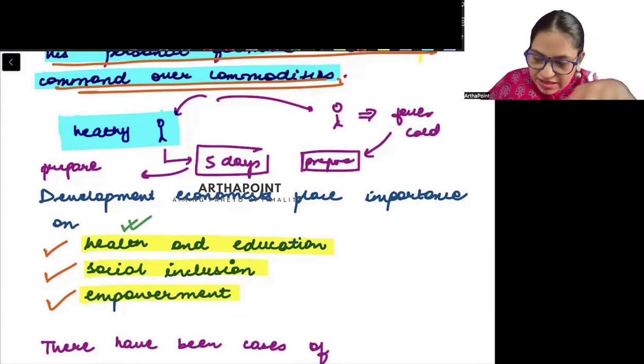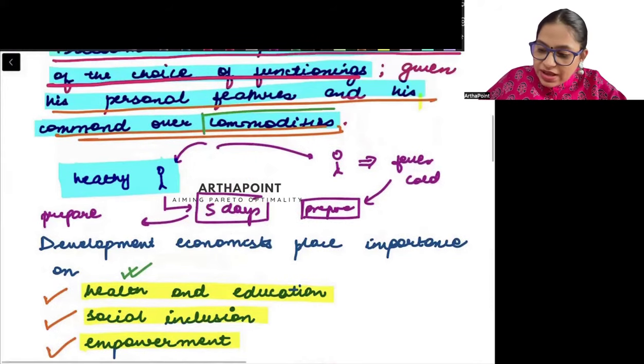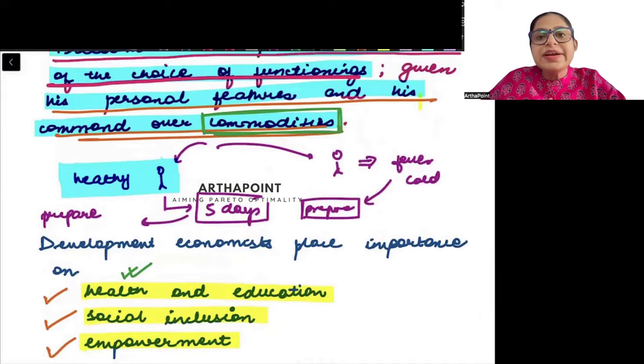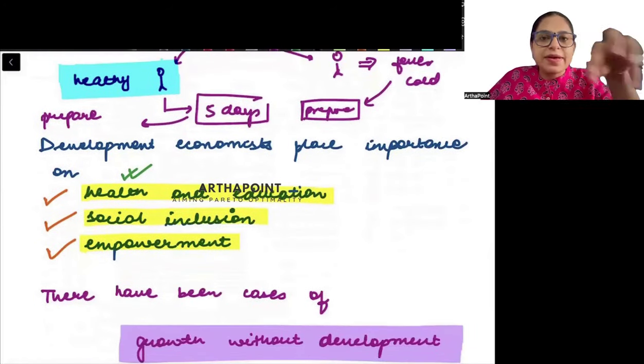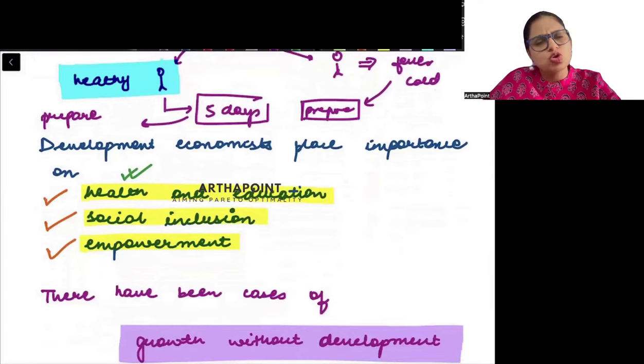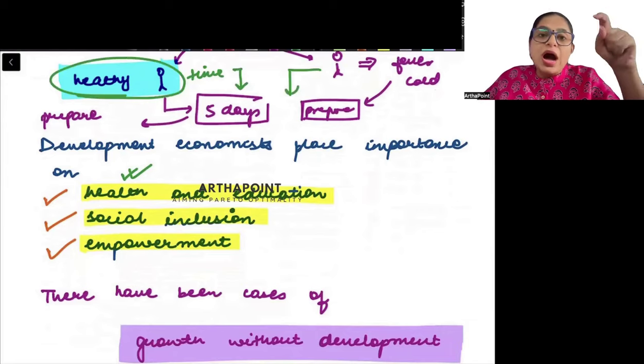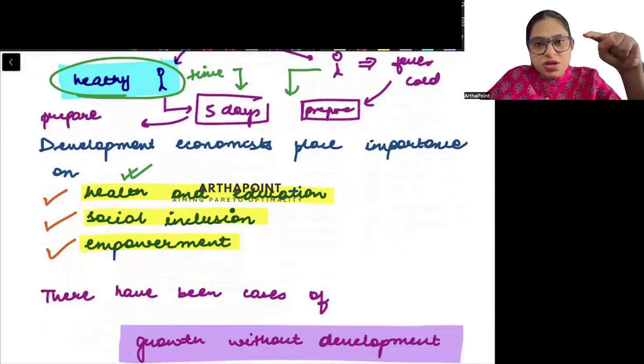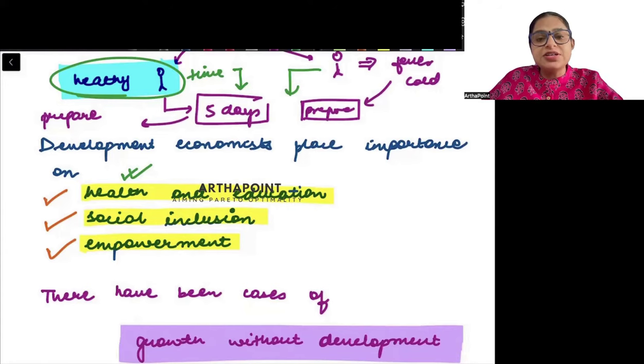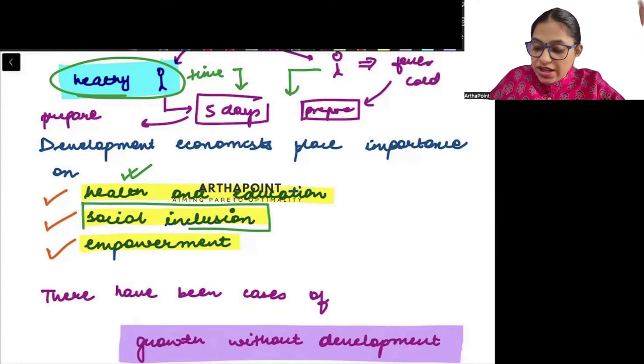This is why development economics tells us why these economists put a lot of importance on health. Because if you are healthy, the way you will be able to use the commodity will be very different from when you are unhealthy.